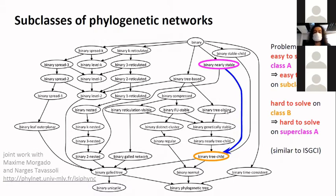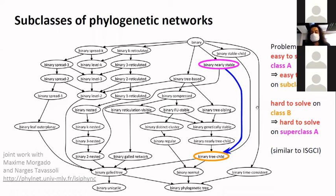Why is it nice to have those inclusion relationships? Because if we can solve a problem on a class, then we can obviously solve the problem as easily with the same algorithm on a subclass. Conversely, if we know that some problem is hard to solve on a subclass, then we know it will be at least as hard to solve in the superclasses. This is inspired by the ISGCI infrastructure in graph theory.